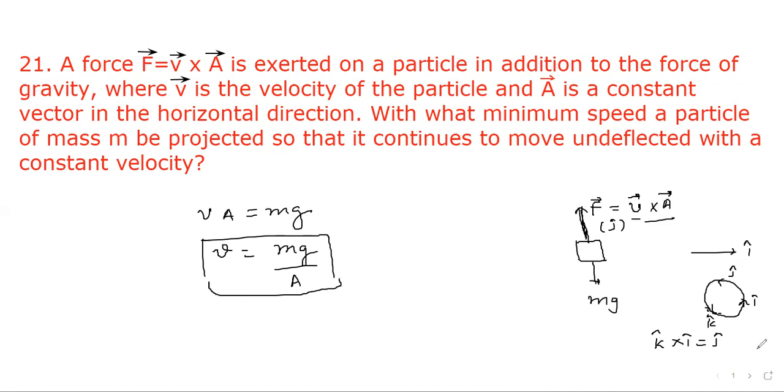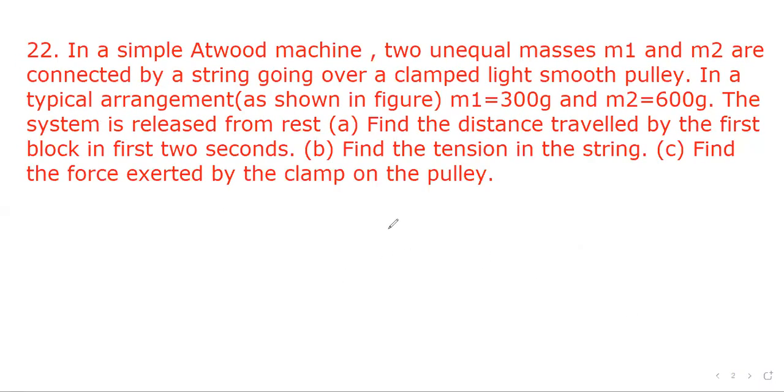Now let's go to the next question. The question says, in a simple Atwood machine, two unequal masses M1 and M2 are connected by a string going over a clamped light smooth pulley. In a typical arrangement as shown in figure, M1 equal to 300 grams and M2 equal to 600 grams.